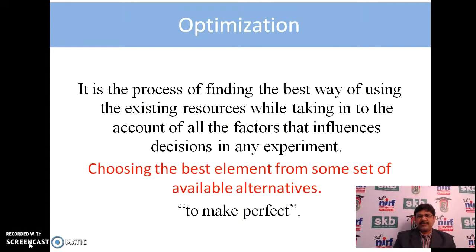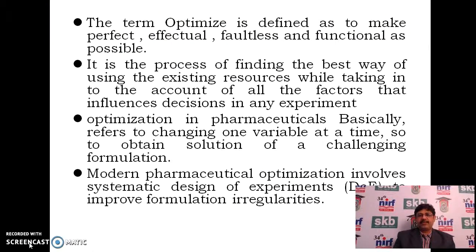A well-chosen experimental design maximizes the amount of information that can be obtained for a given amount of experimental effort. Design of experiment begins with determining the objective of an experiment and selecting the process factors for the particular study. Optimization is a process of finding the best way of using the existing resources while taking into account all the factors that influence a decision in any experiment — in a nutshell, choosing the best element from some set of available alternatives. It is a basic process to make anything perfect.